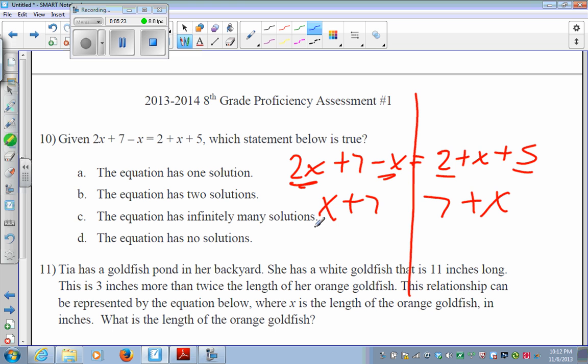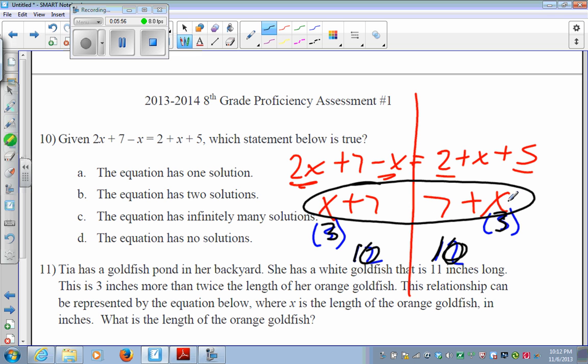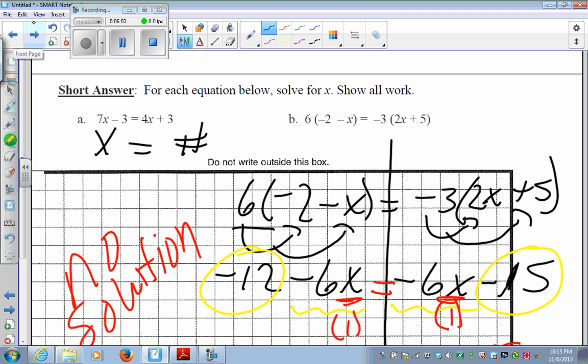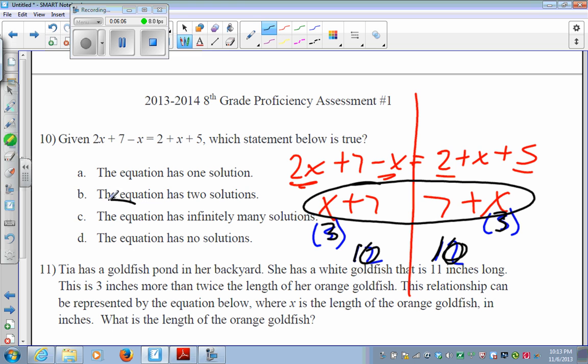I can put in any number I want for x. Say I put in a 5. 5 plus 7 is 12. 7 plus 5 is 12. It's going to balance out. Let's say I put in a different number. I put in a 3. 3 plus 7 is 10. 7 plus 3 is also 10. If I've got exactly the same thing on both sides of my equal sign, that means that any number on the planet, that number plus 7 is going to be the same thing as 7 plus that same number. So this equation has infinitely many solutions. That means you can put any number on the planet into that equation, and it will work.